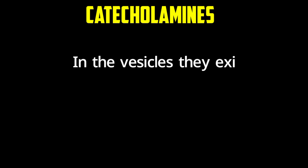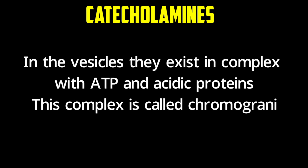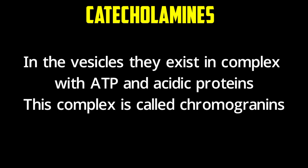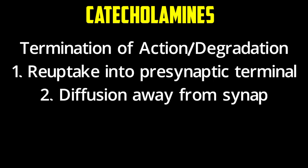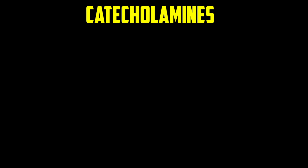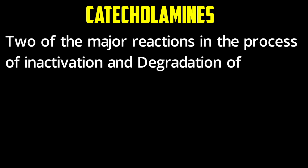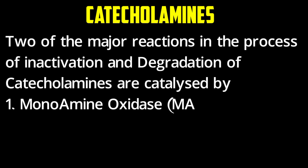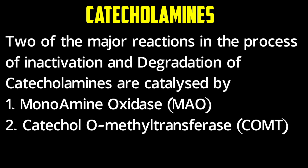Catecholamines are transported into vesicles by the protein VMAT2 (vesicle monoamine transporter 2). In vesicles, catecholamines exist in a complex with ATP and acidic proteins. Their actions are terminated through re-uptake into the presynaptic terminal and diffusion away from the synapse. Two major enzymes involved in inactivation and degradation are monoamine oxidase (MAO) and catechol-O-methyltransferase (COMT).